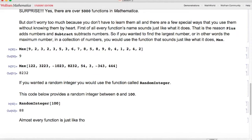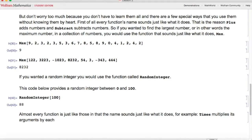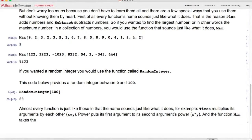Almost every function is just like those in that the name sounds just like what it does. For example, Times multiplies its arguments by each other, as in x times y. Power puts its first argument to its second argument's power, as in x to the y power. And the function Min takes the smallest number or the minimum number from a collection of numbers.